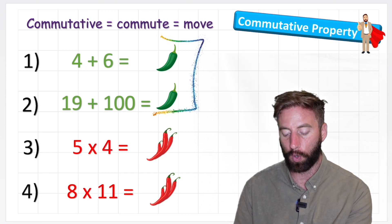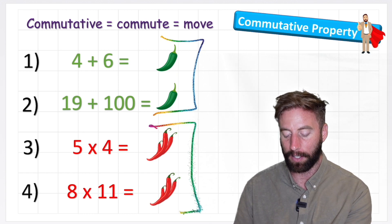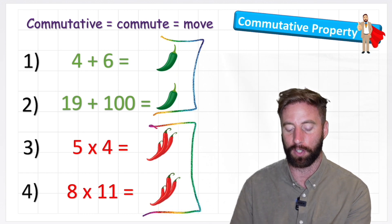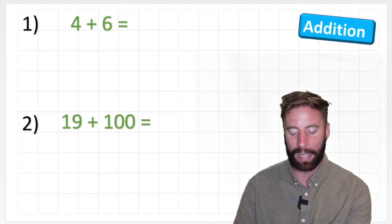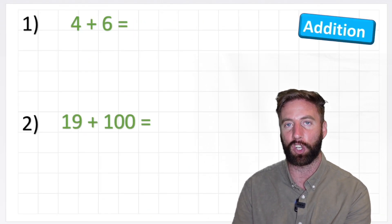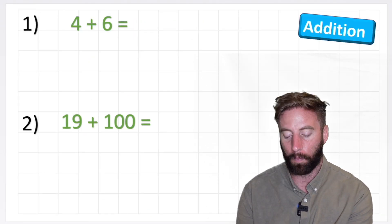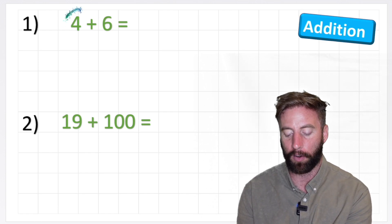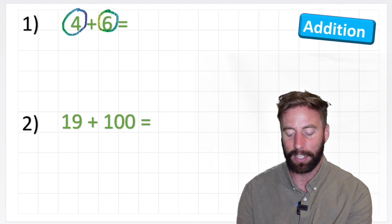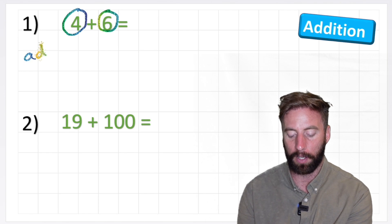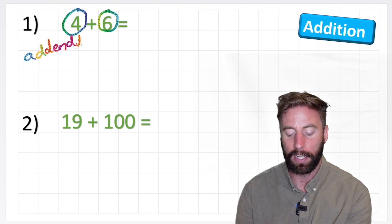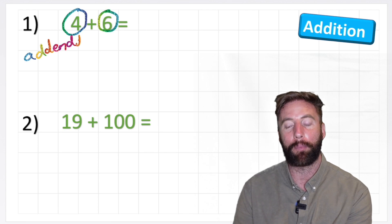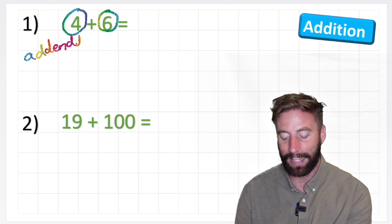We can do this in both addition questions and multiplication questions. Let's look at this addition question 4 + 6. When we have 4 + 6, these two numbers are called addends, spelled A-D-D-E-N-D-S. It doesn't matter which way around we put these addends, we're still going to get the same number.